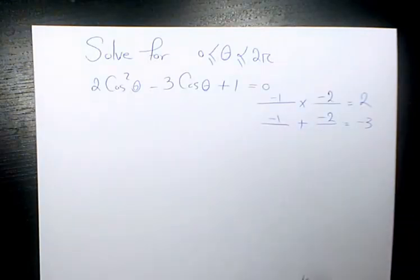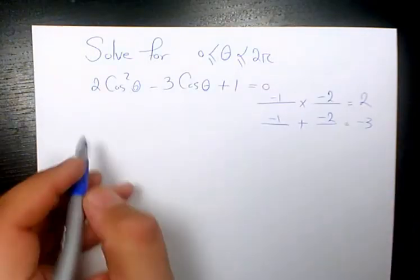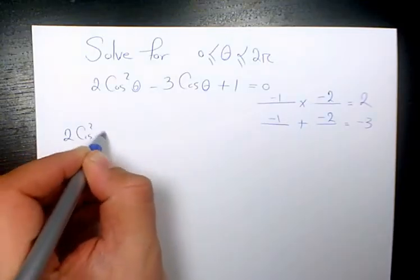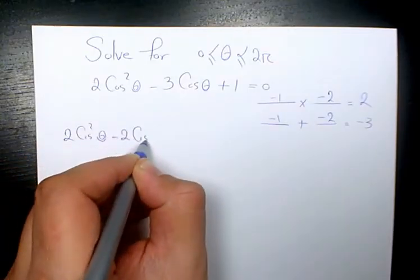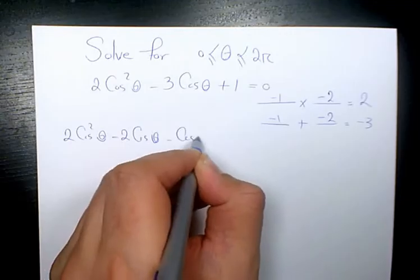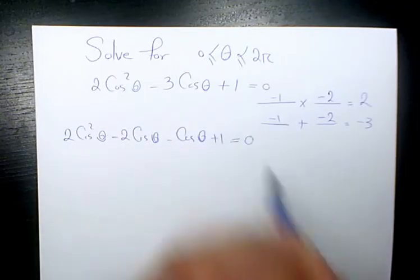When you add them it's negative 3, and when you multiply them it's positive 2. So we have 2 cosine squared theta minus 2 cosine theta minus cosine theta plus 1 equals 0.